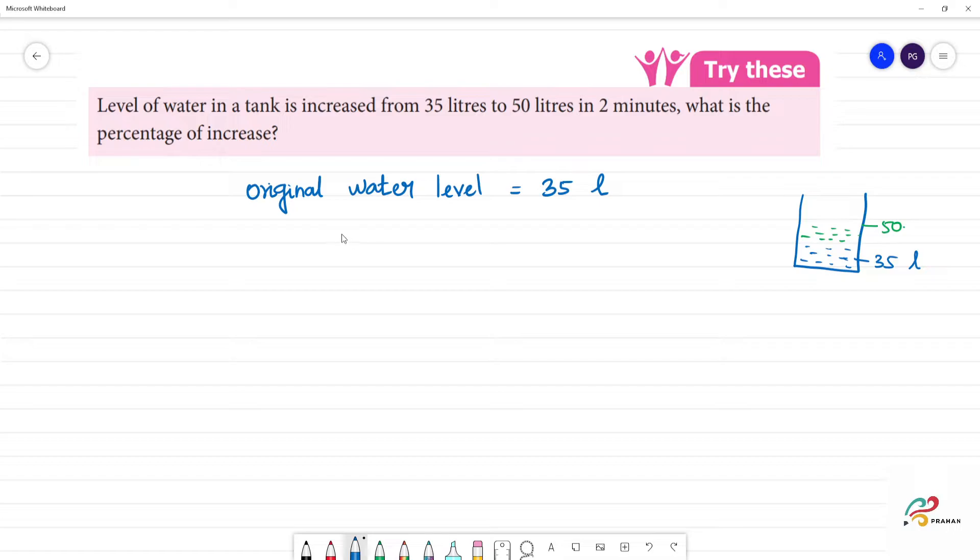Then increased level is 50 liters. So, change in water level or change in increase, we have 50 minus 35. How much is 50 minus 35? It's 15.